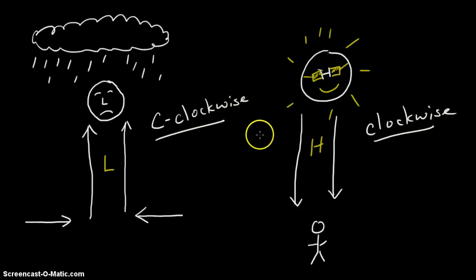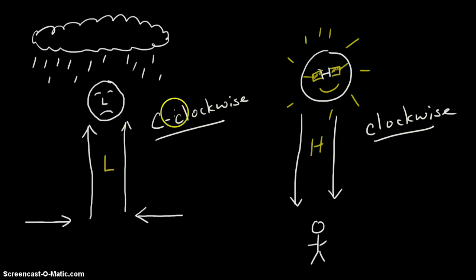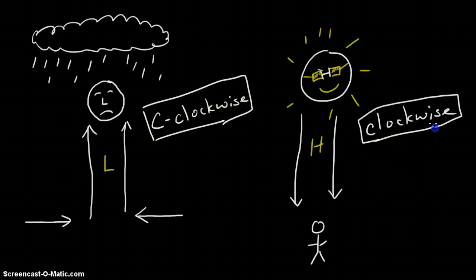In my last video I talked about low and high pressure systems and mentioned at the end of the video that a low pressure system will rotate counterclockwise and a high pressure system will rotate in a clockwise fashion. And again this is in the Northern Hemisphere.